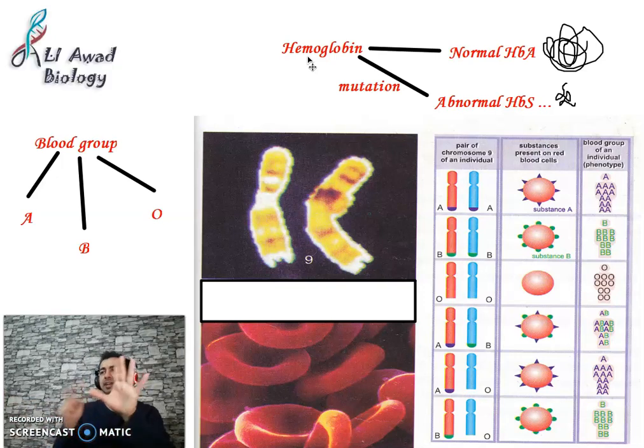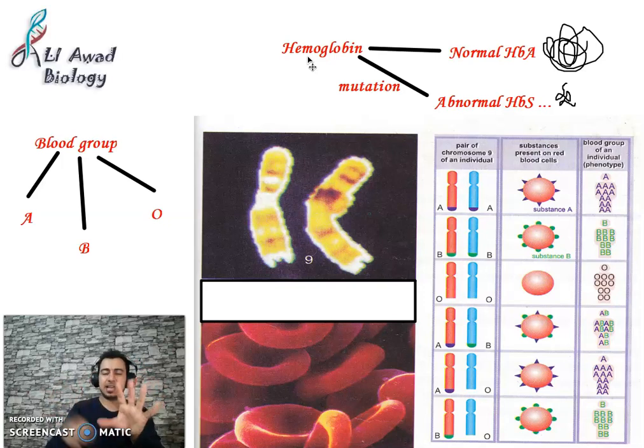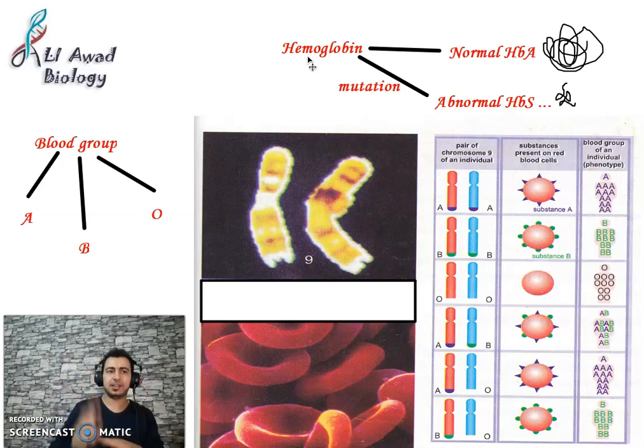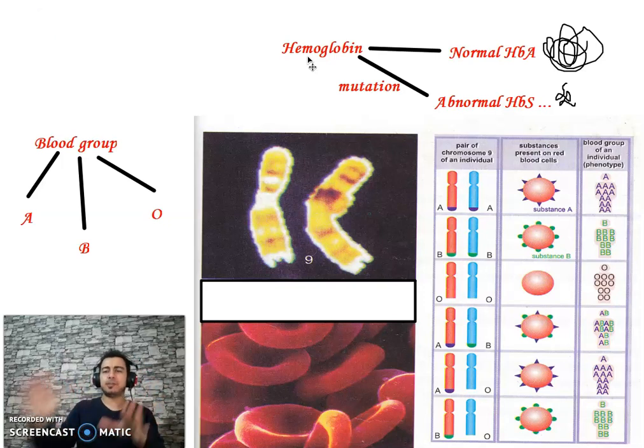So if I say gene of color of eyes, it has many alleles: black, blue, honey, grey, etc. The gene of hemoglobin has alleles: HbA, HbS, thalassemic, etc.